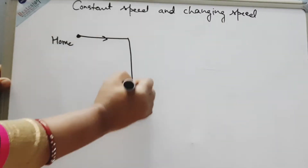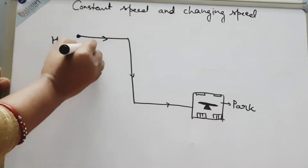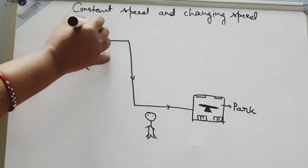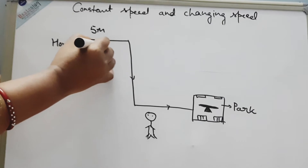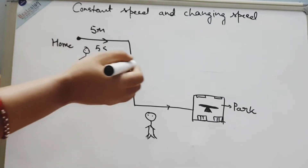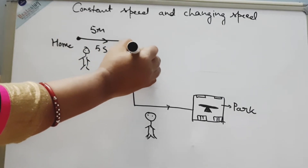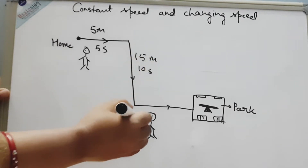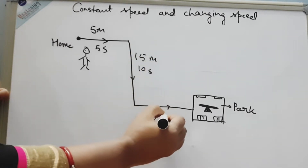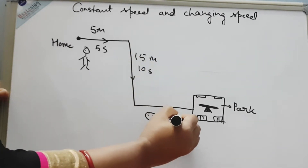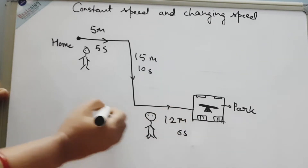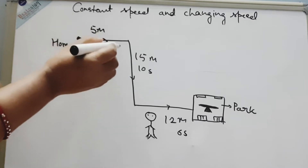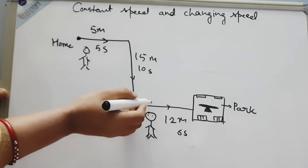This is Sohan's journey from his home to a park. The journey he covered is 5 meters in 5 seconds, then 15 meters in 10 seconds, and 12 meters in 6 seconds. Now we will see what his speed is in each section of his journey.